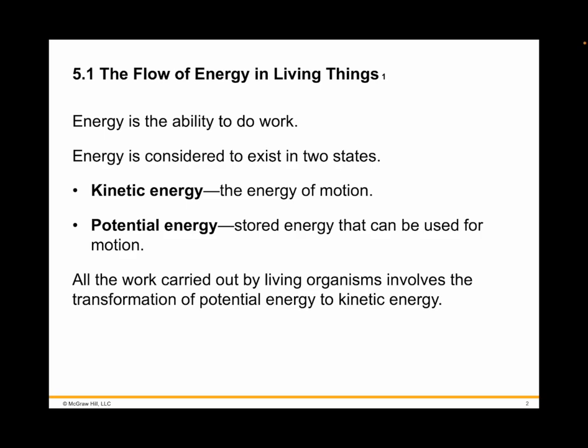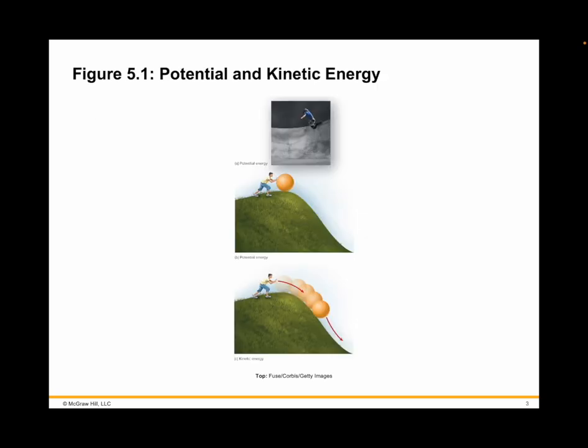Objects that are not moving but have the capacity to move have potential energy. A boulder perched on a hill has potential energy. After that boulder is pushed and begins to roll down the hill, some of its potential energy is converted into kinetic energy. All of the work carried out by organisms involves this transformation of potential energy to kinetic energy.